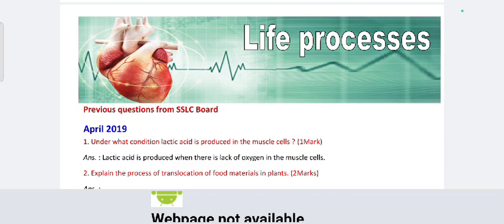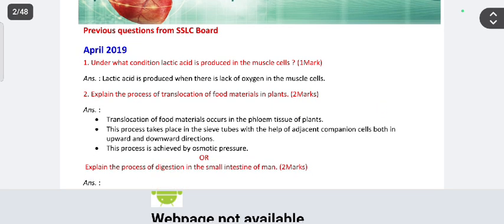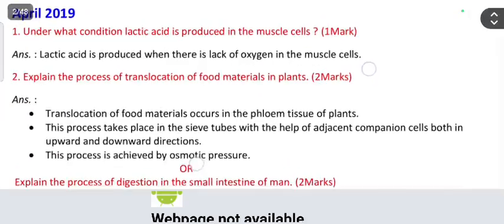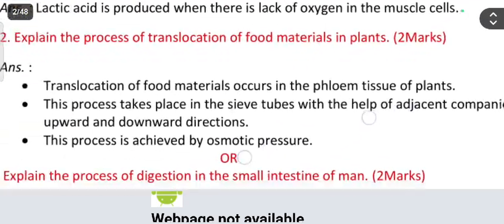From the Life Processes chapter, from April 2019 paper: under what condition is lactic acid produced in the muscle cells? Answer: lactic acid is produced when there is a lack of oxygen in the muscle cells. Then, explain the process of translocation of food materials in plants — this is a two-marks question.